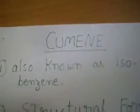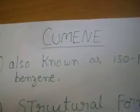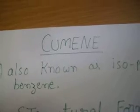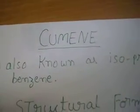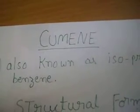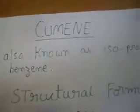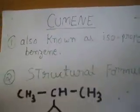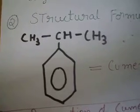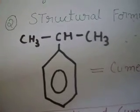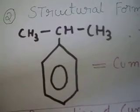Cumene is also known as isopropylbenzene. Cumene is the trivial name given to isopropylbenzene. This is the structural formula of cumene, where the propane group is attached to the benzene ring.